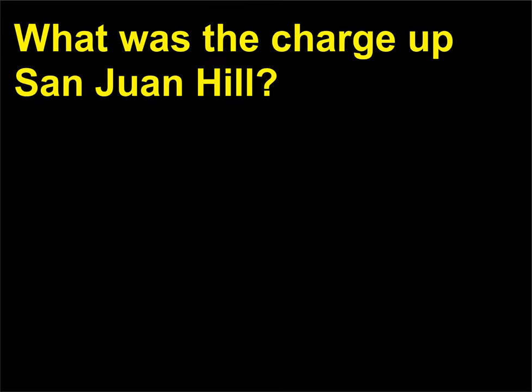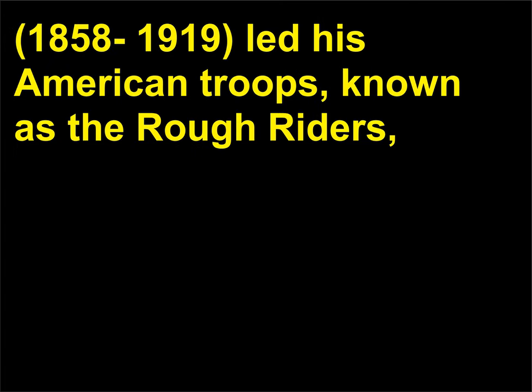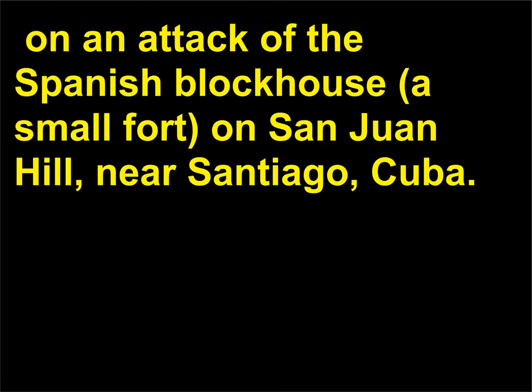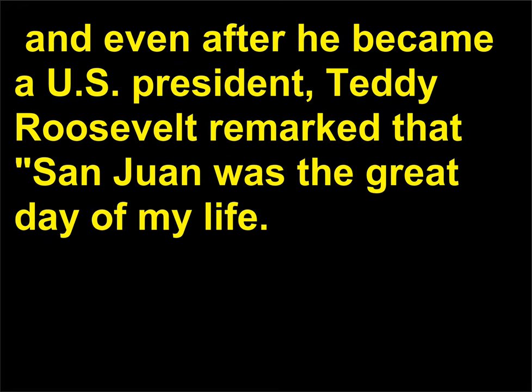What was the charge up San Juan Hill? On July 1st, 1898, during the Spanish-American War, Colonel Theodore Roosevelt, 1858–1919, led his American troops, known as the Rough Riders, on an attack of the Spanish blockhouse — a small fort — on San Juan Hill, near Santiago, Cuba. Newspaper reports made Roosevelt and the Rough Riders into celebrities. And even after he became U.S. president, Teddy Roosevelt remarked that San Juan was the great day of my life.